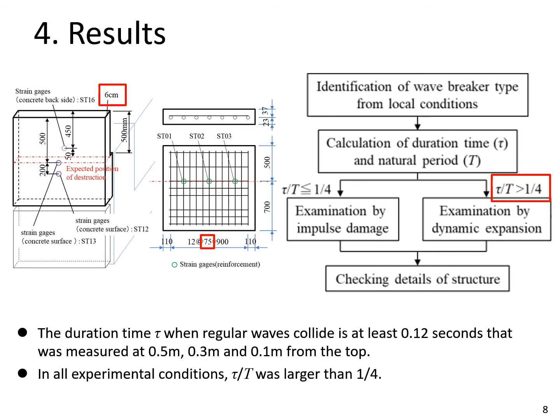The duration time tau when regular waves collide is at least 0.12 seconds. That was measured at 0.5 meters, 0.3 meters, and 0.1 meters from the top. In all experimental conditions, tau per T was larger than one-quarter. Then, dynamic expansion is applied.